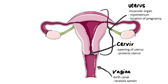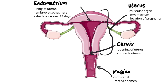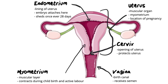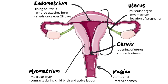Let's move on to the layers that make up the uterus. The first layer is this fine, slightly bumpy layer you may already be familiar with — it is called the endometrium. The endometrium is the lining of the uterus; it is where the embryo attaches and it sheds once every 28 days. The next layer — this thick pink inner layer — is known as the myometrium. The myometrium is the muscular layer of the uterus. It contracts during childbirth and active labor, and also contracts during menstruation to shed the lining.